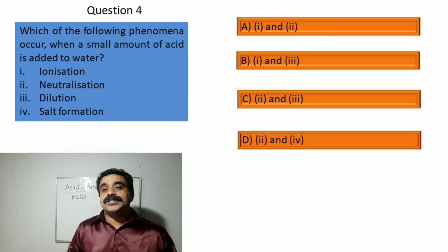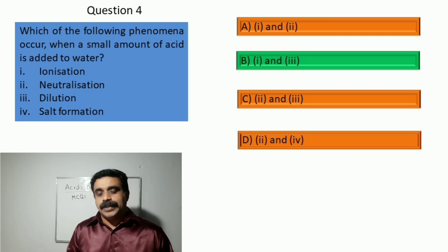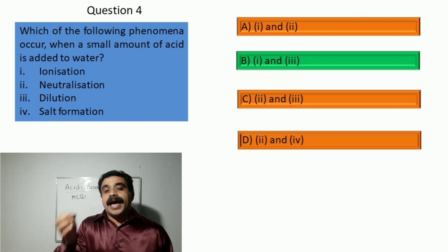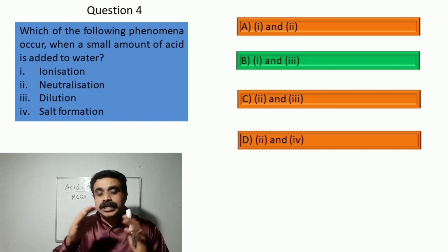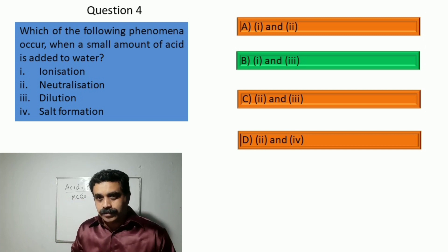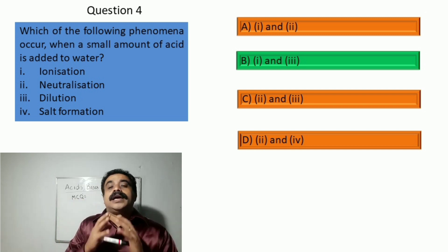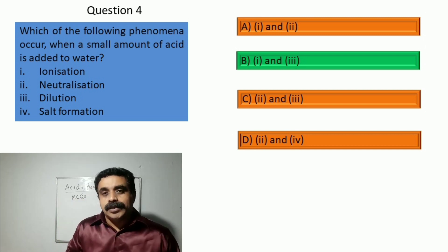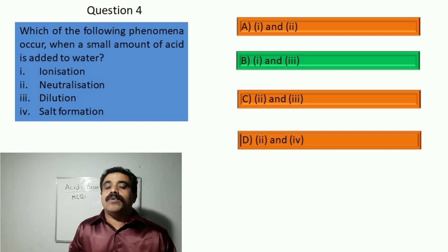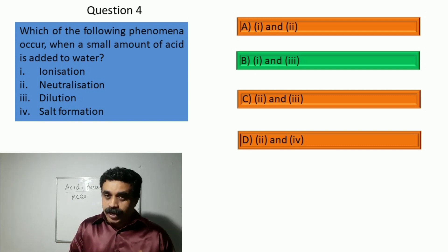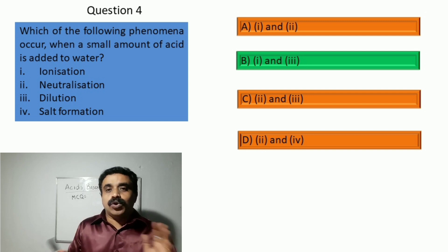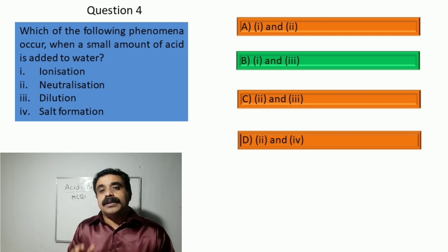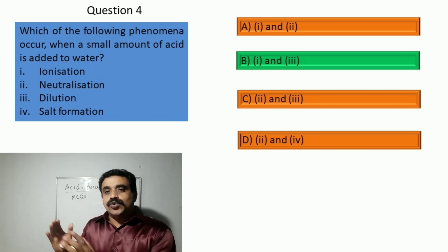The answer is option B, 1 and 3. When acid is added to water it splits up into ions — ionization — and it also gets diluted, so both ionization and dilution happen when acid is added to water.